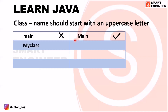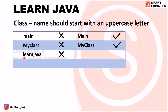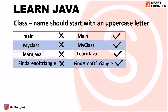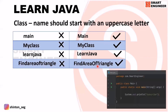Now for the second word in a class name — the class name should start with an uppercase letter, and any subsequent word should also start with a capital letter. So if the second word starts with a small letter, that class name is wrong. The right format is: the class name should start with a capital letter, and the next word should also start with an uppercase letter. In our program, the class name is 'Main' and it is starting with an uppercase letter.